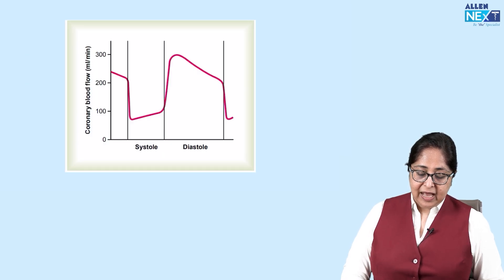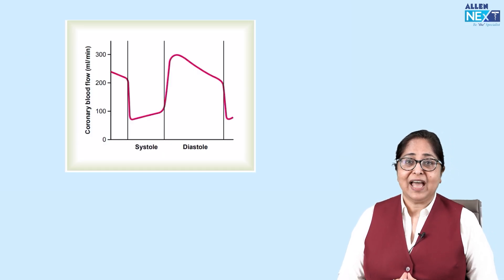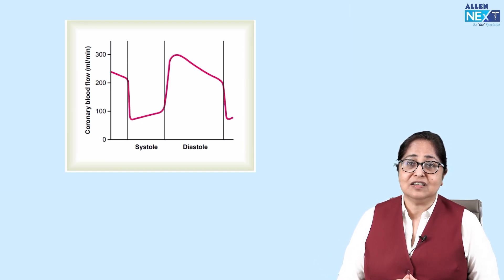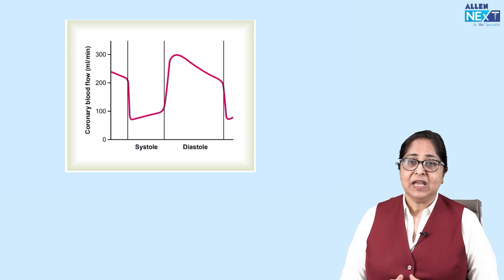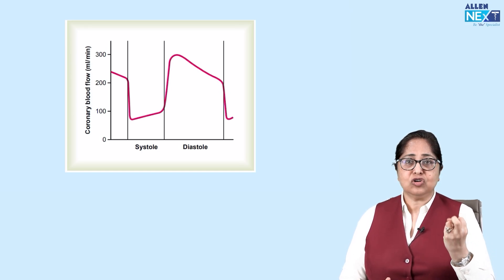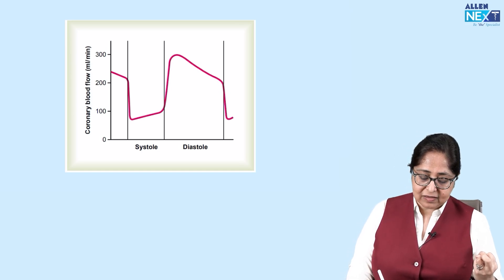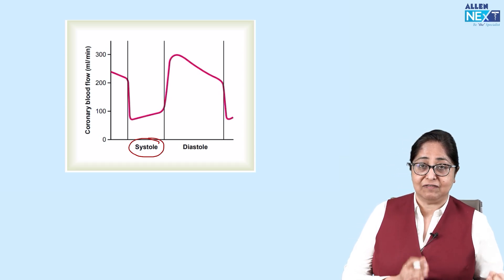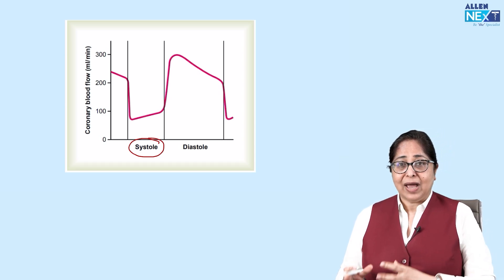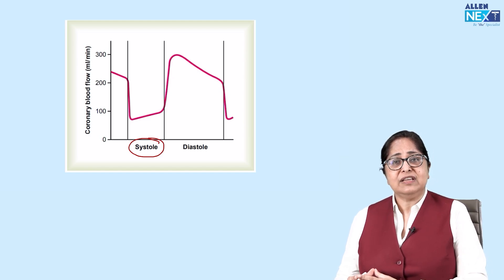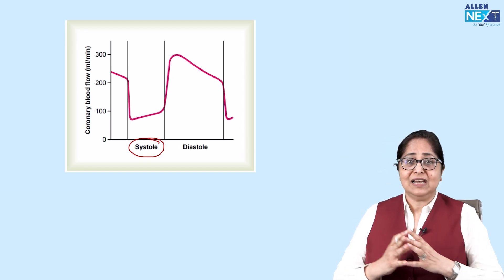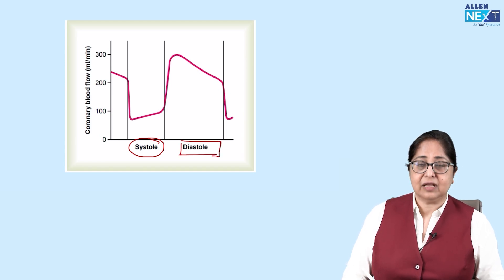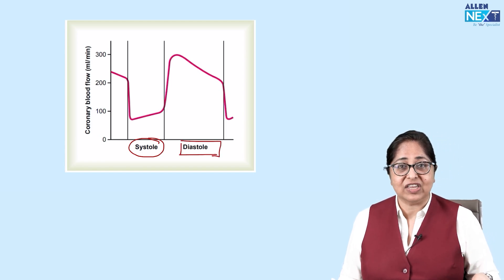As far as the coronary circulation is concerned, most of the blood flow occurs during diastole. During systole, when the heart contracts, it compresses the coronary blood vessels, especially on the left side of the heart. The right side continues to receive blood during both systole and diastole, but the left side mainly receives blood during ventricular diastole.